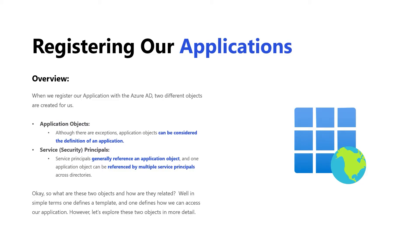Additionally, we have something called a service security principle. Technically, you're going to hear 'service principle,' but you'll also hear 'security principle,' which is a broader version. You're going to hear 'user principle' and 'service principle' — both fall under the idea of a security principle. So security principle is the high-level term, while service principle and user principle are more specific versions of it. A service principle generally references an application object, and one application object can be referenced by multiple service principles across directories.